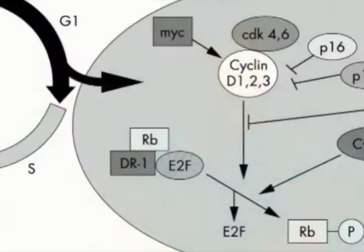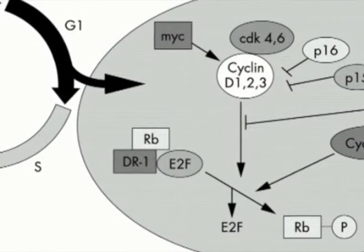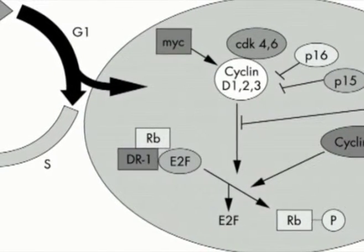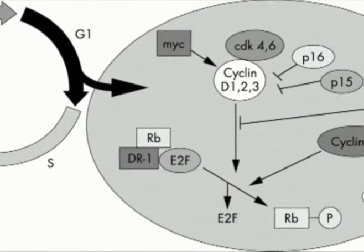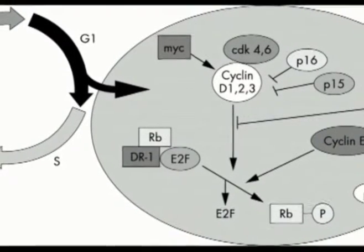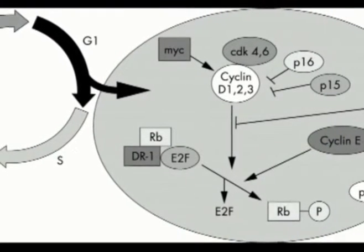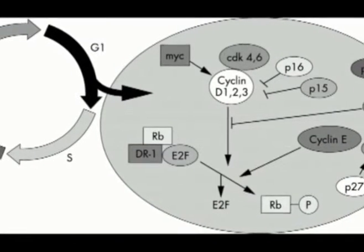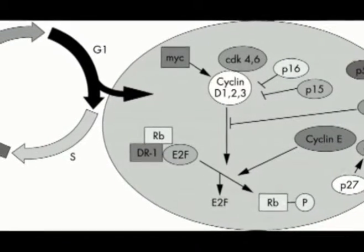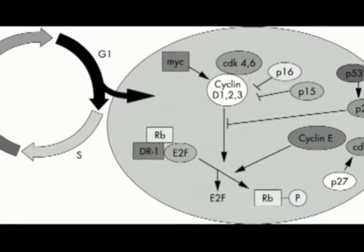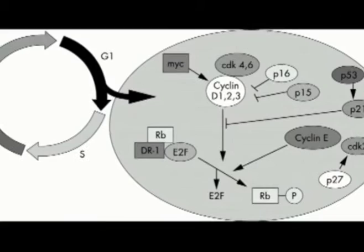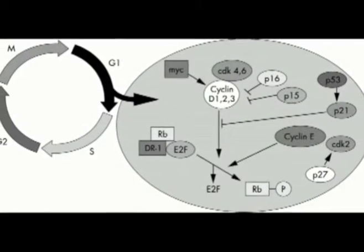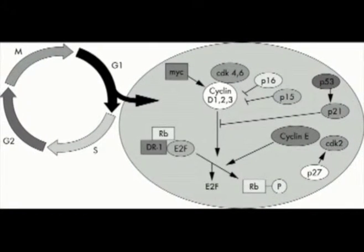G1 phase: After the M phase of the previous cell cycle, the daughter cells begin G1 of interphase of the new cell cycle. G1 phase is called the first gap phase.